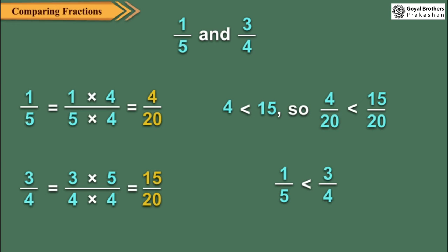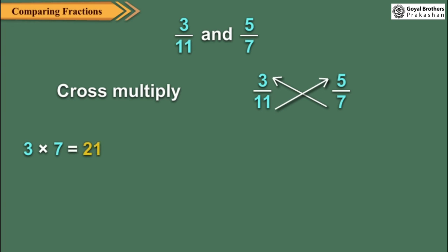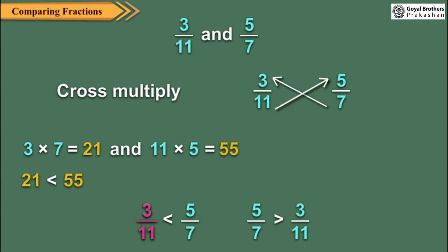Two fractions can also be compared by using the method of cross multiplication. Let us compare 3 upon 11 and 5 upon 7. Now, 3 into 7 is equal to 21 and 11 into 5 is equal to 55. Since 21 is less than 55, hence, 3 upon 11 is less than 5 upon 7 or 5 upon 7 is greater than 3 upon 11.